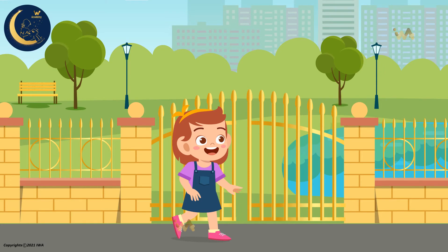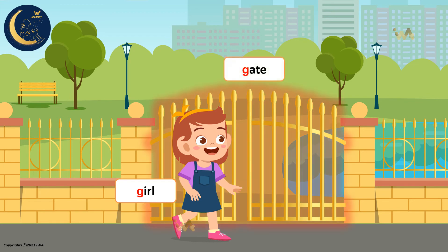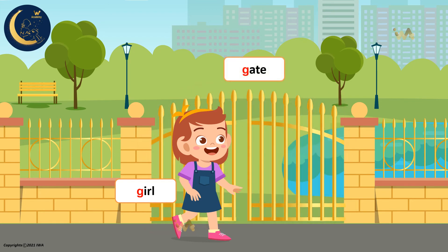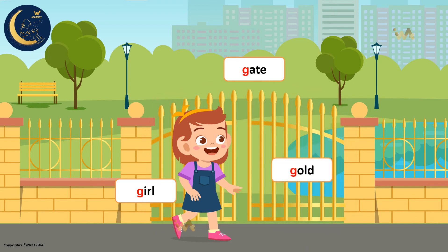Here is a girl. Listen to the first sound in the word girl: G, G. It's the hard sound of the letter G. What is she doing? She is opening the gate. G, G — gate. The colour of the gate is gold. Did you hear the first sound? It's G, G — gold. Can you say the words again? Girl, gate, gold. Excellent!